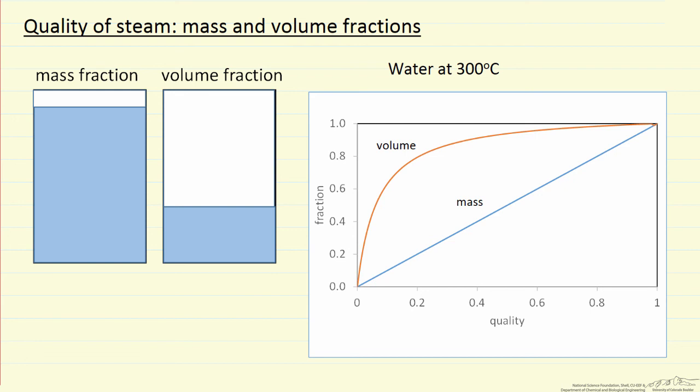So I've tried to represent this here using as an example water at 300 degrees C. I've indicated on the left this is a quality here of 0.10, or 10%, so 10% vapor, 90% liquid by mass.